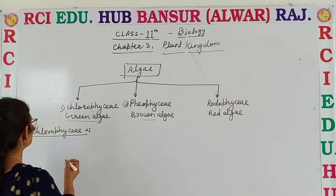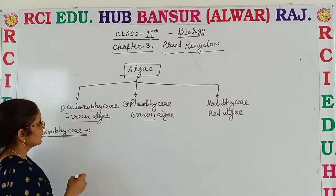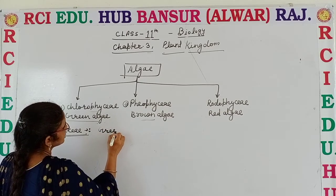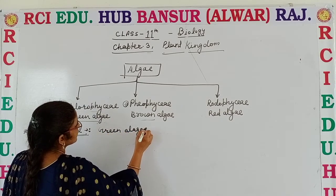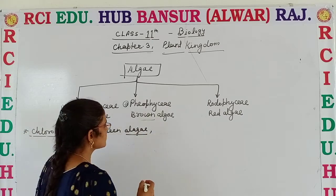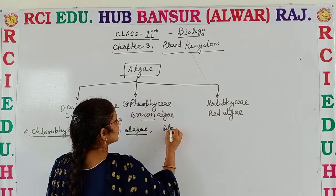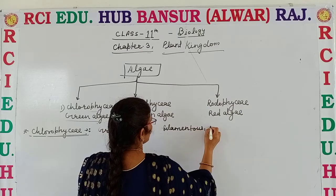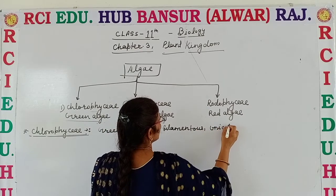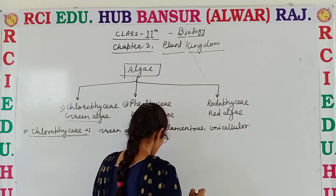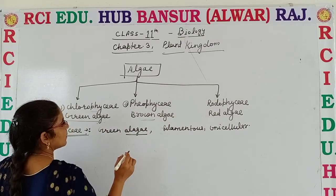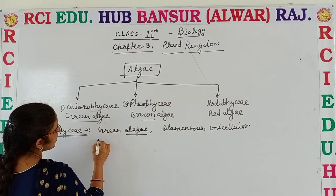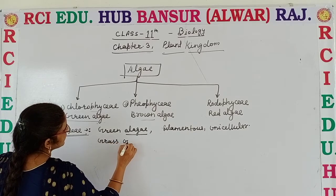Today we discuss Chlorophyceae and its general features. The algae in this group are also known as green algae. If we discuss about the thallus, it is filamentous or unicellular. These algae are grass green.